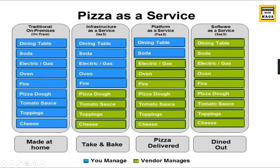Now let's understand cloud computing services using the pizza analogy. Traditionally, if you want to make pizza at home you own everything: cheese, toppings, tomato sauce, pizza dough, oven, gas, dining table — you make it all yourself and enjoy your meal. That is the on-premise scenario.